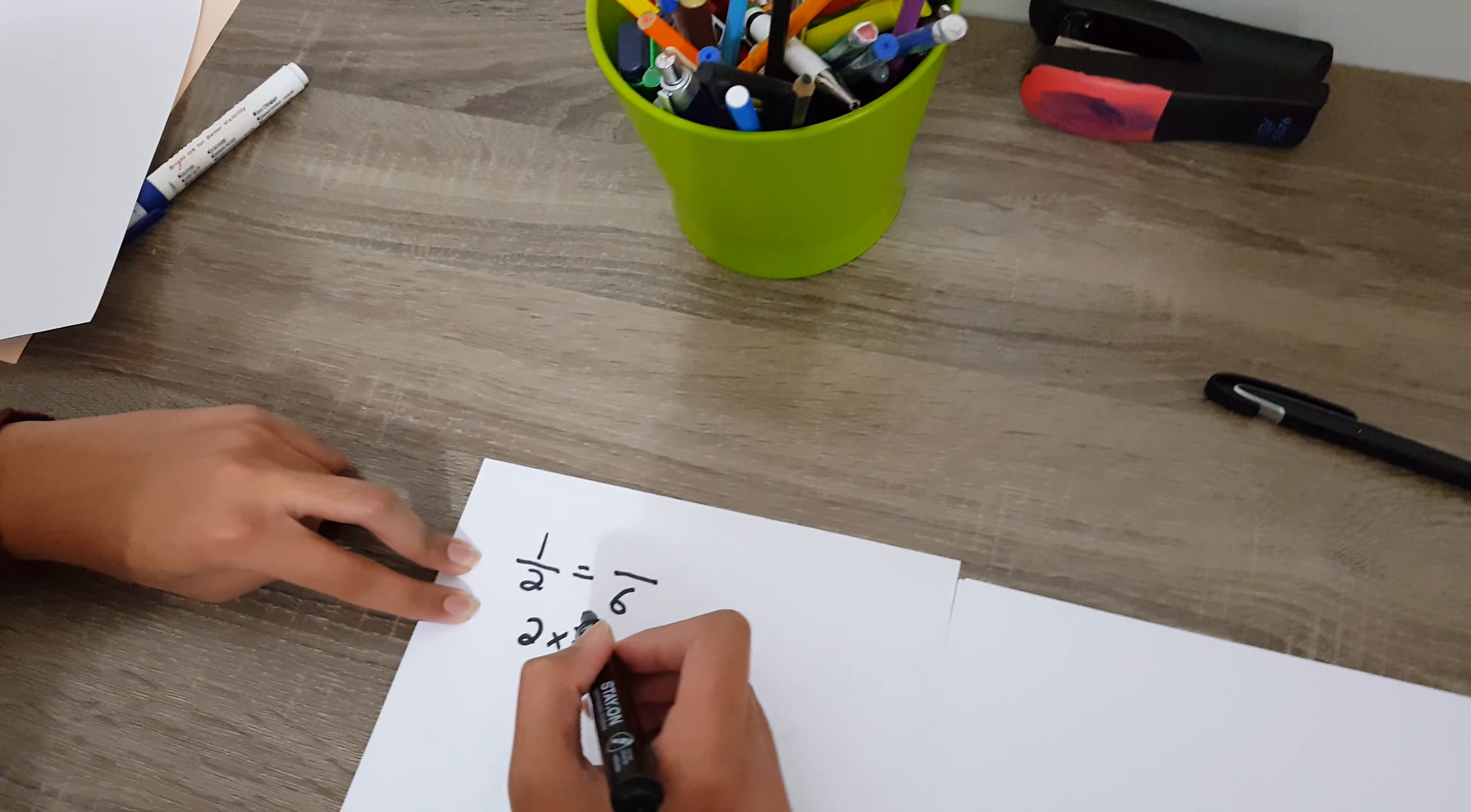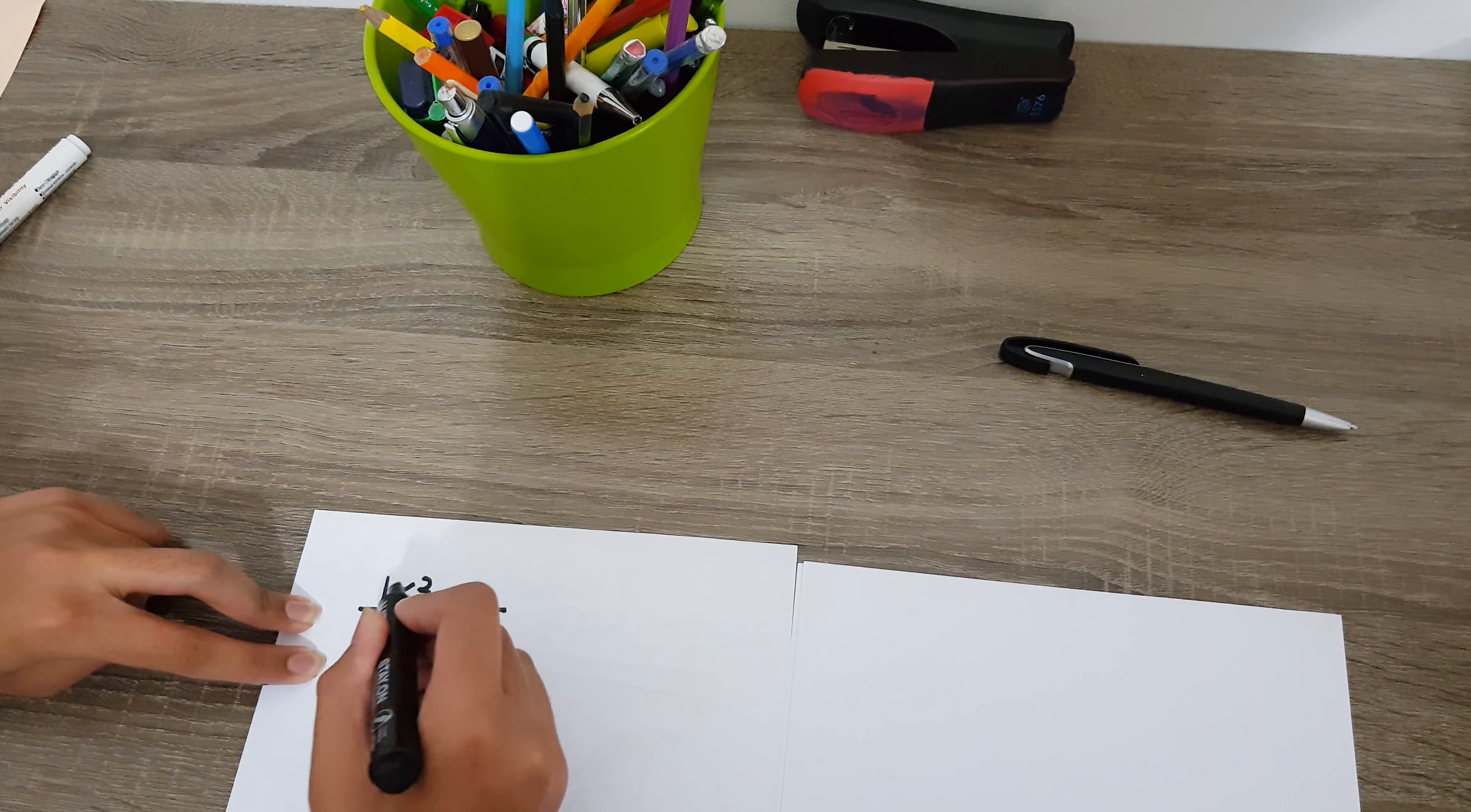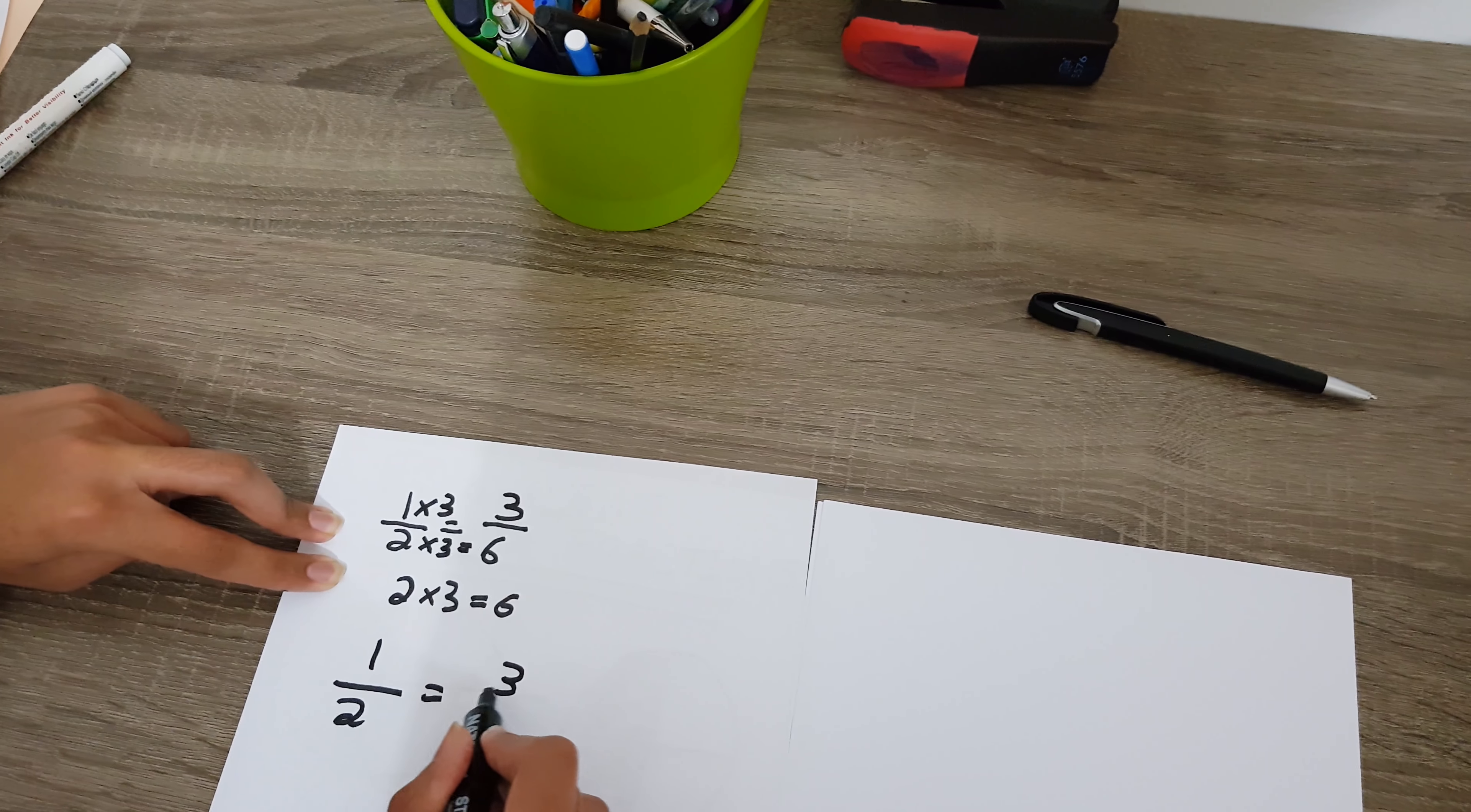a denominator of six. So one over two, you need to times the numerator by three and the denominator by three. Two times three gives six, one times three will give us three. So one over two is equal to three over six.